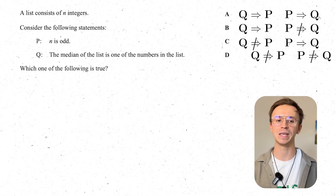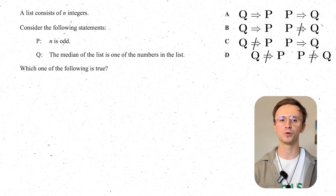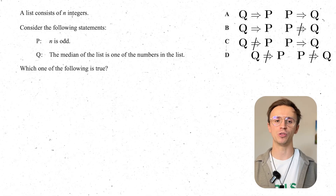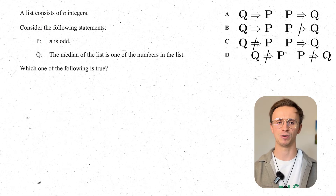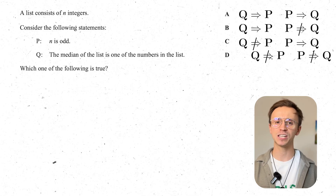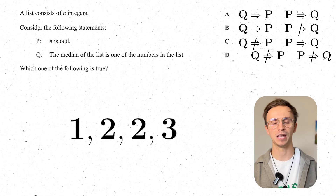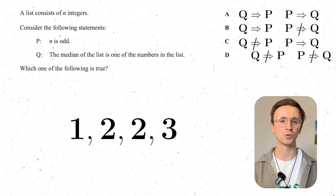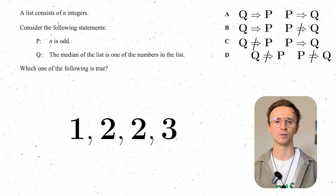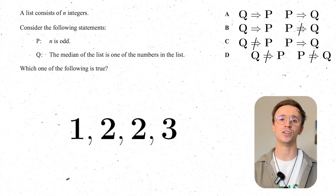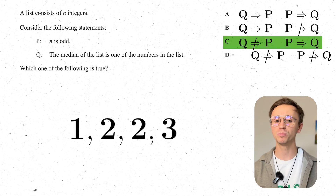Now I need to go backwards — assume q and prove p, the necessary part. Assume the median is one of the numbers in the list; does n have to be odd? This is easy to disprove with a counterexample: take the list 1, 2, 2, 3. The median — cancelling one from each side — is halfway between 2 and 2, which is still 2. So the median is in the list, but n = 4, which is even. So q does not imply p — it is not a necessary condition. The correct answer is C: p is sufficient but not necessary.